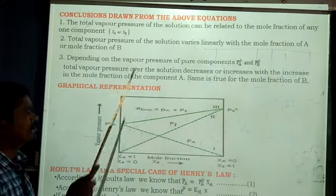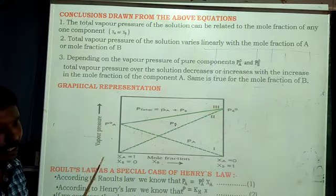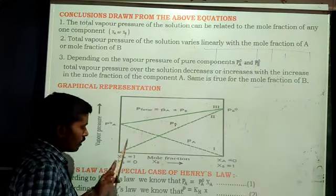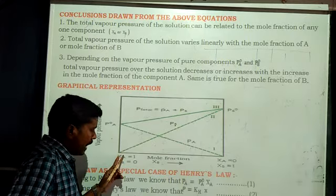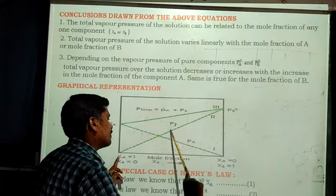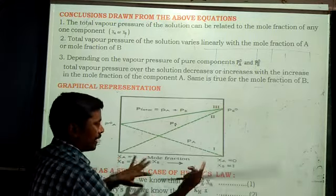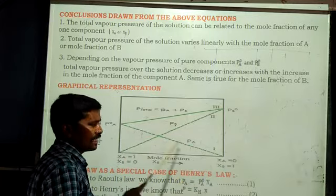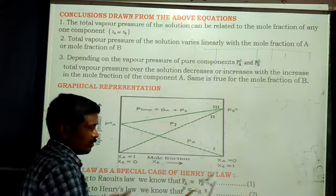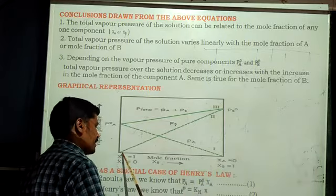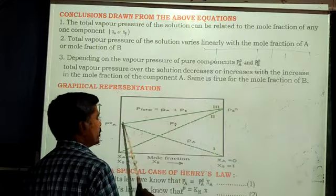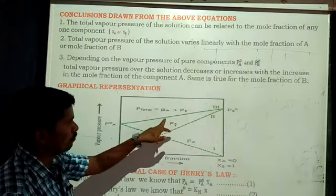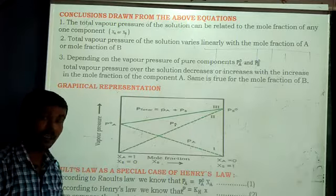Come to the graphical representation. Here on the Y-axis is vapor pressure and the X-axis is XA. As the mole fraction increases, the vapor pressure of the solute goes on increasing. When XA = 1, the vapor pressure equals PA⁰. Similarly, when XB = 0 and XA = 0, the vapor pressure increases for B. If you join these two lines, you get a total pressure curve, where PS = PA + PB.